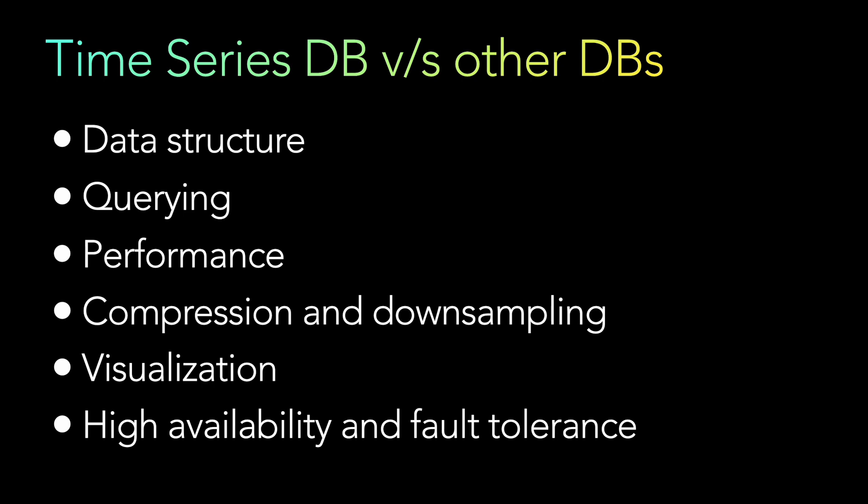Last but not least is high availability and fault tolerance. Since time series data is often critical to business operations, these databases are designed to be highly available and fault tolerant, with built-in replication and disaster recovery capabilities. Overall, the main difference between time series databases and general-purpose databases is that time series databases are specifically designed to handle large volumes of timestamp-based data and make it easy to analyze that data over a period of time.